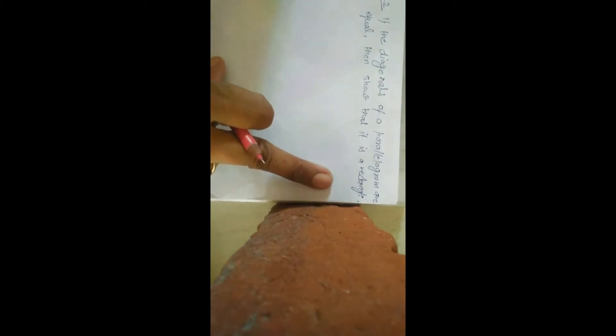Question 2 of exercise 8.1 is, if the diagonals of a parallelogram are equal, then show that it is a rectangle.